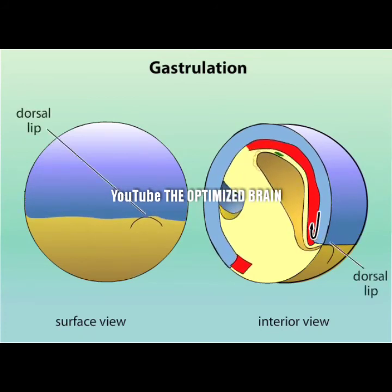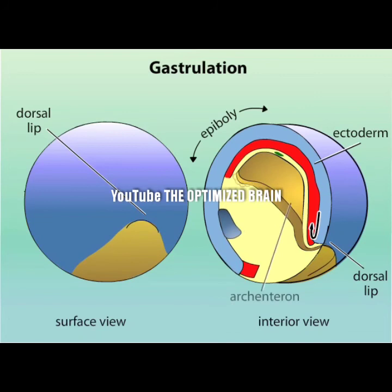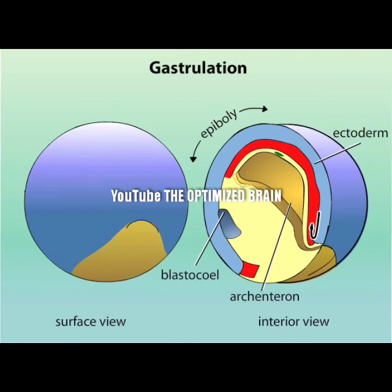At the same time, the ectoderm extends around the embryo surface in a process called epiboly. As gastrulation proceeds, a cavity, called the archenteron, forms while the blastocele progressively shrinks. The archenteron is the primitive gut and is completely surrounded by endodermal tissue.